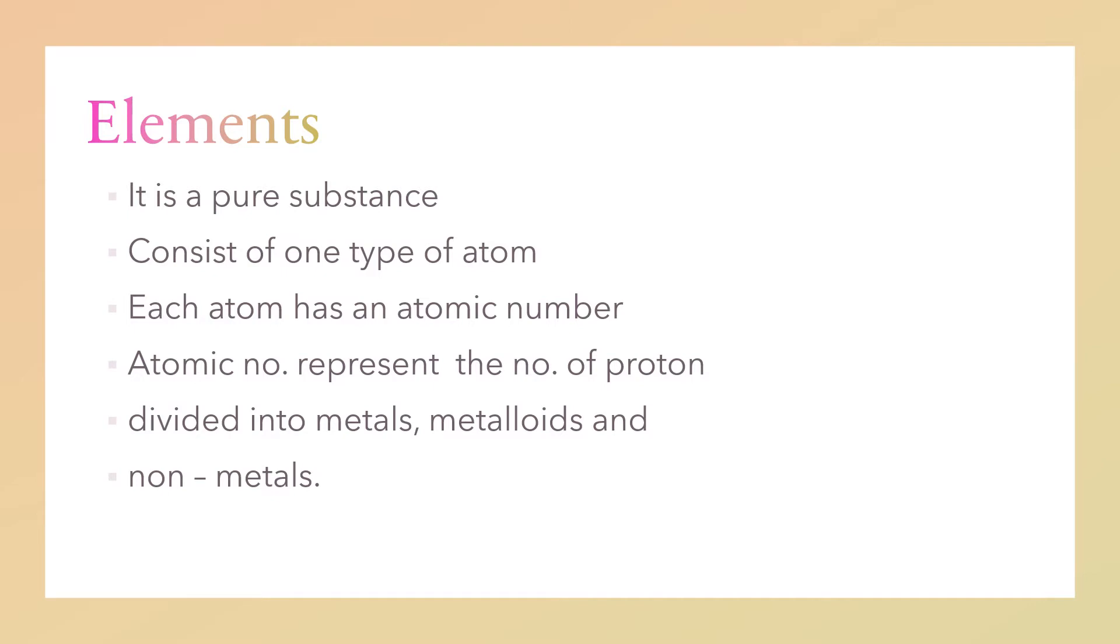First of all, what is element? Element is a pure substance that consists of one type of atom. Each atom has an atomic number. The atomic number represents the number of protons. It is also divided into metals, metalloids, and non-metals. It is a pure substance, meaning it cannot be divided by any means, chemical or physical. It only consists of one type of atom. Elements are divided into metals, metalloids, and non-metals.